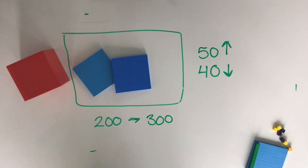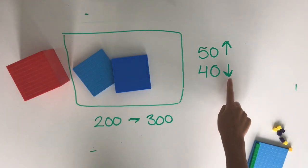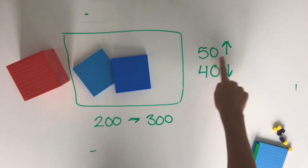So remember, when we're rounding to the nearest hundred, we're comparing the tens against a hundred. If you have 40 or less, we round down, and if you have 50 or more, we round up.